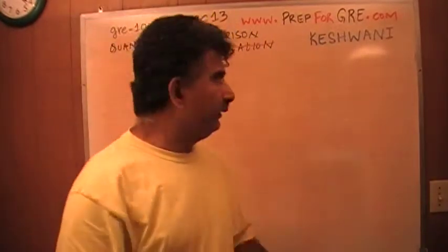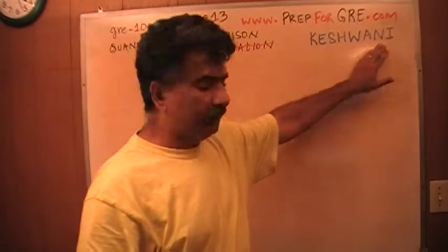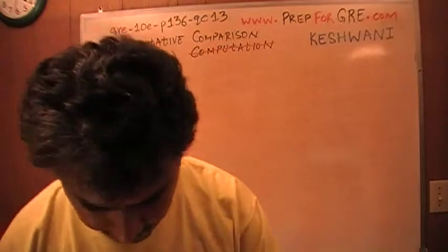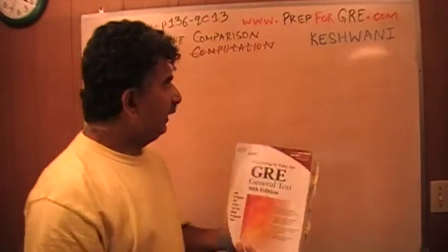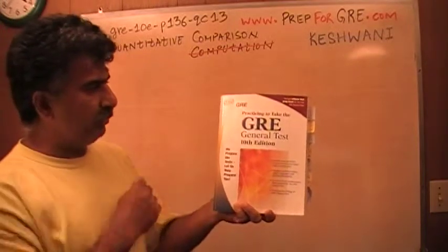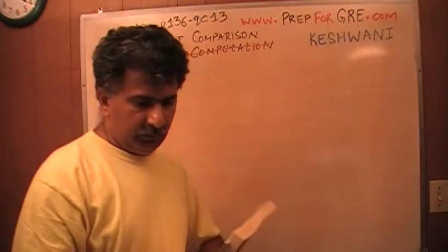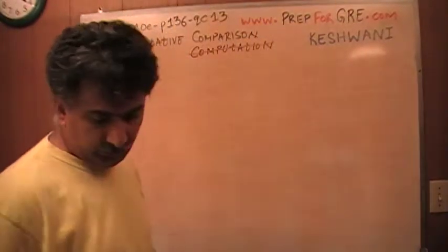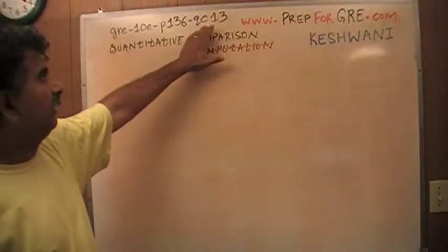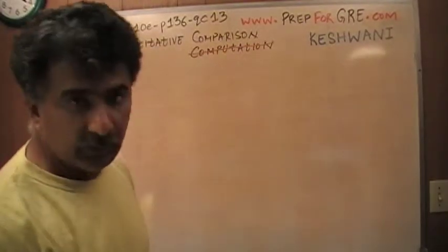Hello, my name is Keshwani — that's K-E-S-H-W-A-N-I. I have been solving math problems for the GRE out of this book, practicing to take the GRE General Test, 10th edition. I'm at page number 136 and the problem I'm about to solve is number 13, quantitative comparison — QC number 13, as opposed to multiple choice.